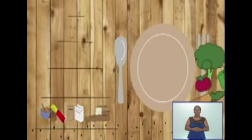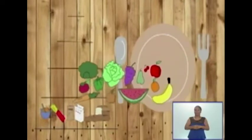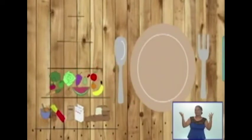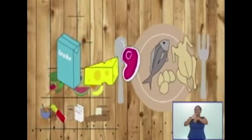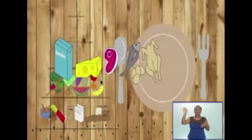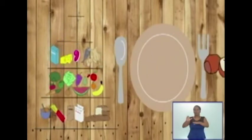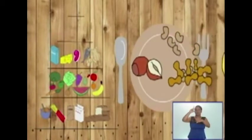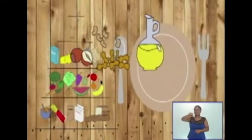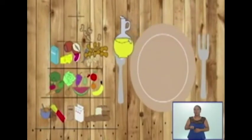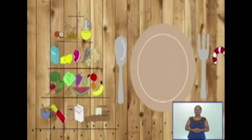En el segundo nivel, que está arriba del primero, se encuentran las frutas y verduras. En el tercer nivel se encuentran las carnes, aves, pescados, huevos, lácteos y derivados. En el cuarto nivel se encuentran las grasas, aceites y frutos oleaginosos, como las almendras, avellanas y maní.